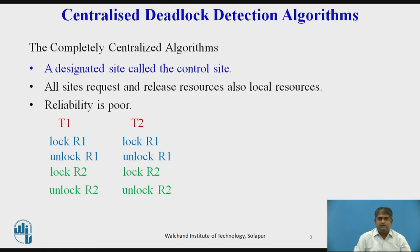All sites request and release resources, including local resources, by sending request resource and release resource messages to the control site respectively. When the control site receives a request resource or release resource message, it correspondingly updates its wait-for graph. The control site checks the wait-for graph for deadlocks whenever a request edge is added to the wait-for graph.